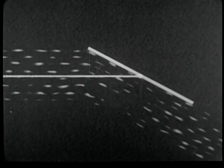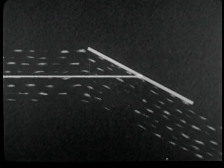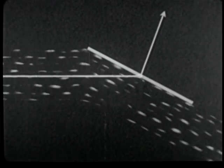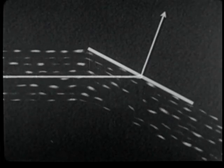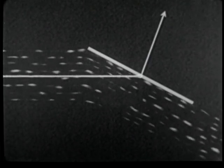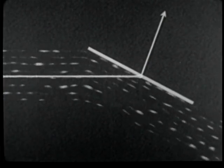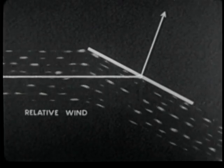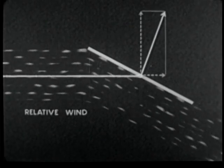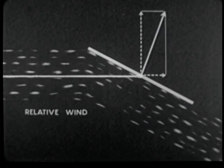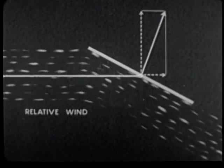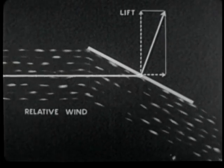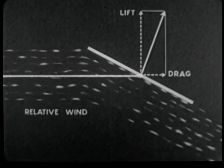An airstream flowing past a flat plate exerts upon it a force whose direction depends upon the angle between the plane of the plate and the direction of airflow. This force may be analyzed into component forces which are called lift and drag. Lift acts at right angles to the relative wind and drag acts parallel to the relative wind.